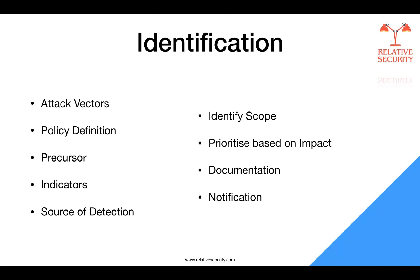The second factor is information impact: incidents may affect the confidentiality, integrity, and availability of the organization's information — for example, a malicious agent may exfiltrate sensitive information. The third factor is recoverability: the size of the incident and the type of resources it affects will determine the time and resources needed to recover. In some instances it is not possible to fully recover from an incident. It would not make sense to spend limited resources on an elongated incident handling life cycle unless that effort was directed at preventing a similar incident in the future.